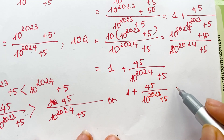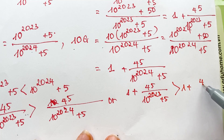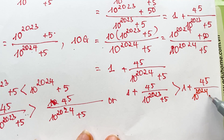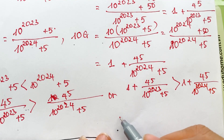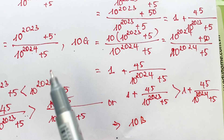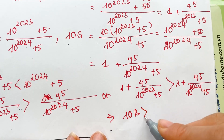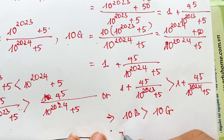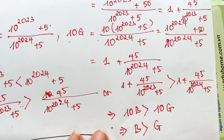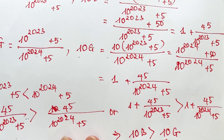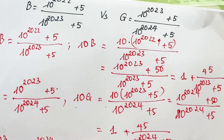Therefore 1 plus 45 over 10 power 2023 plus 5 is greater than 1 plus 45 over 10 power 2024 plus 5, which means 10B is greater than 10G, and so B is greater than G. That's the solution. Thank you for watching, don't forget to subscribe to my channel. Love you all, bye bye.